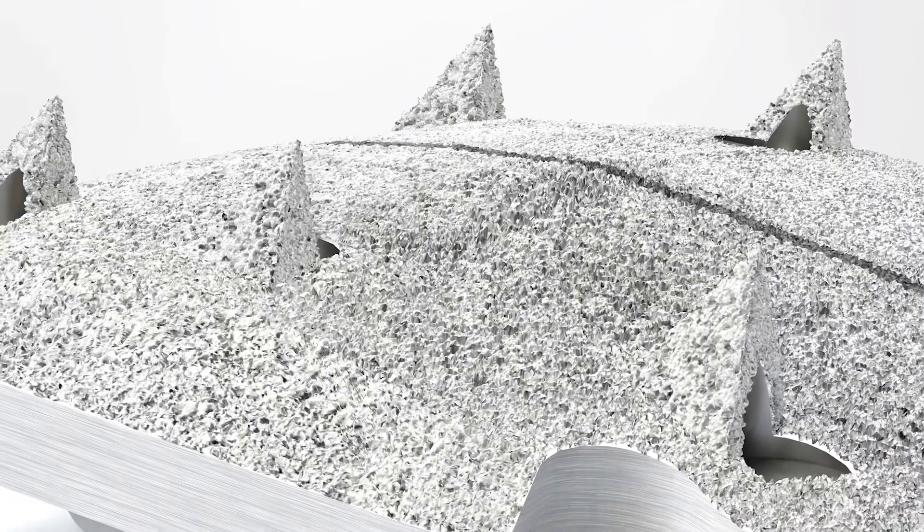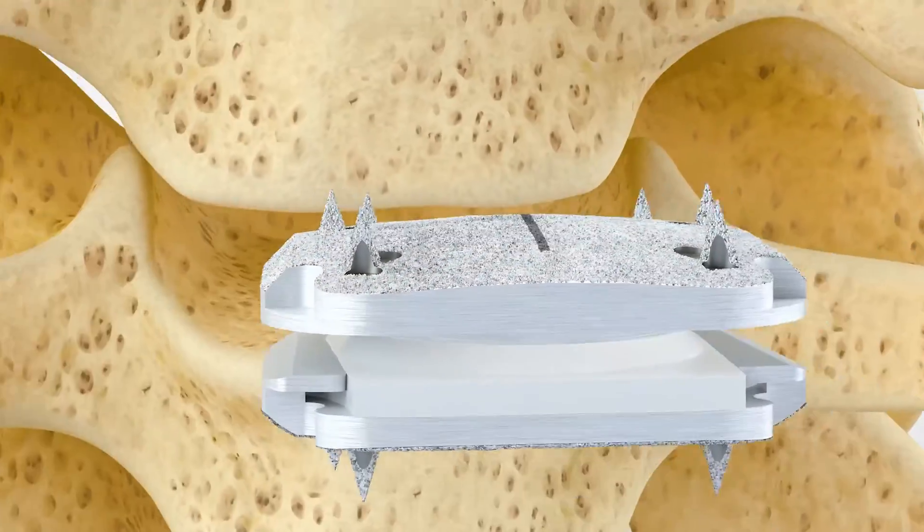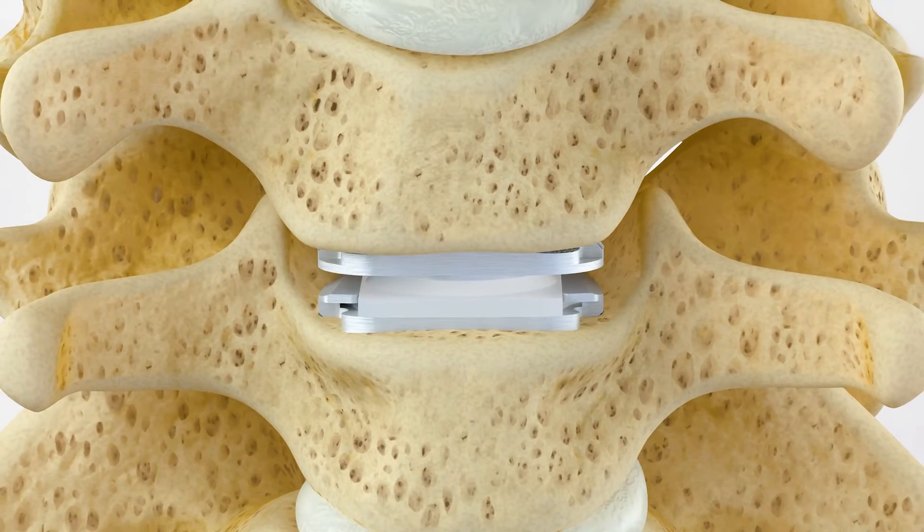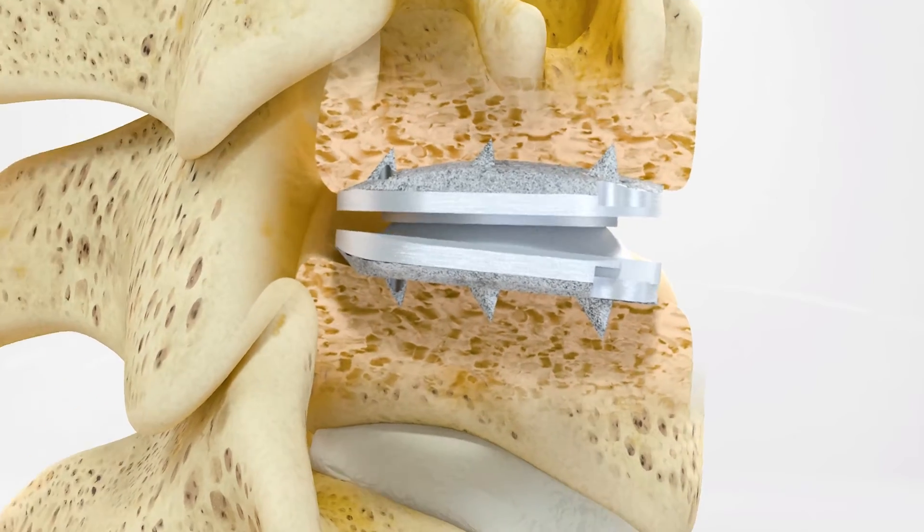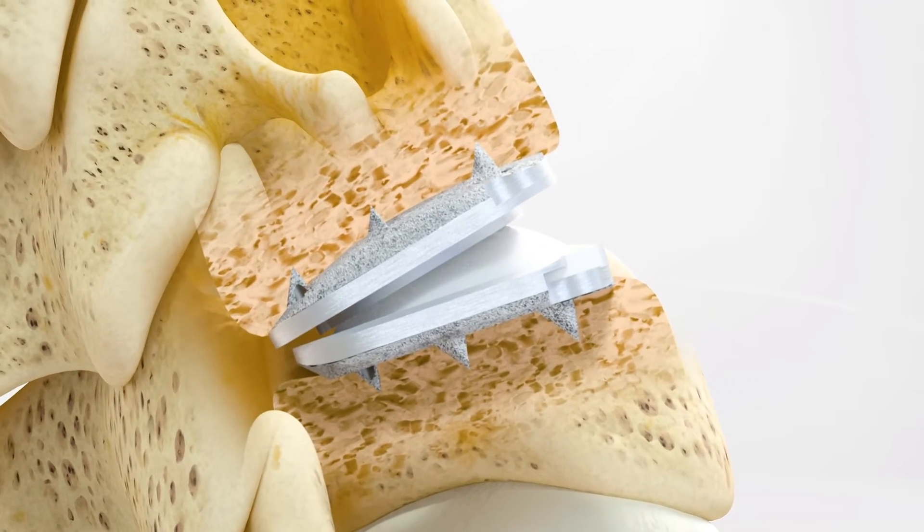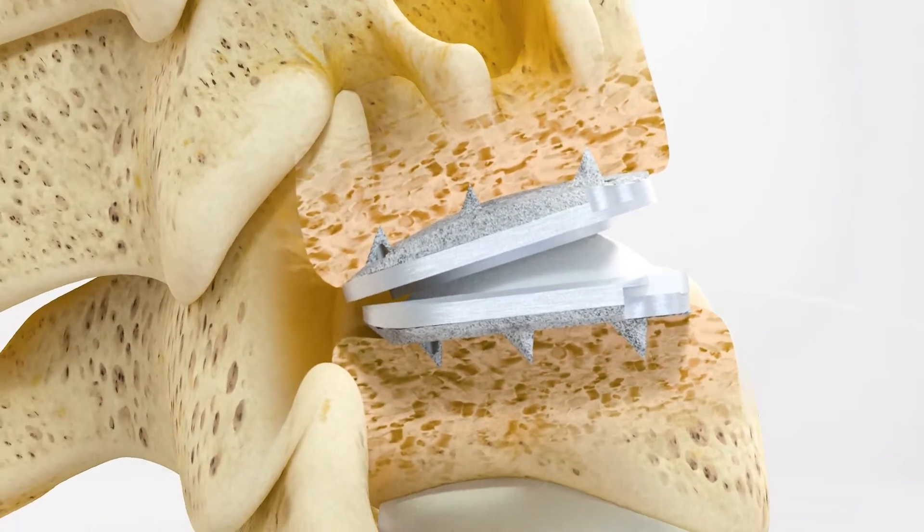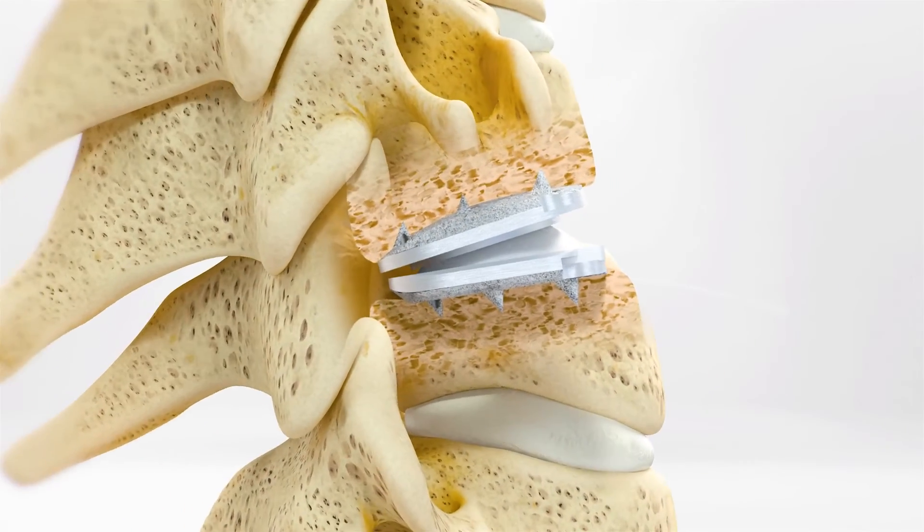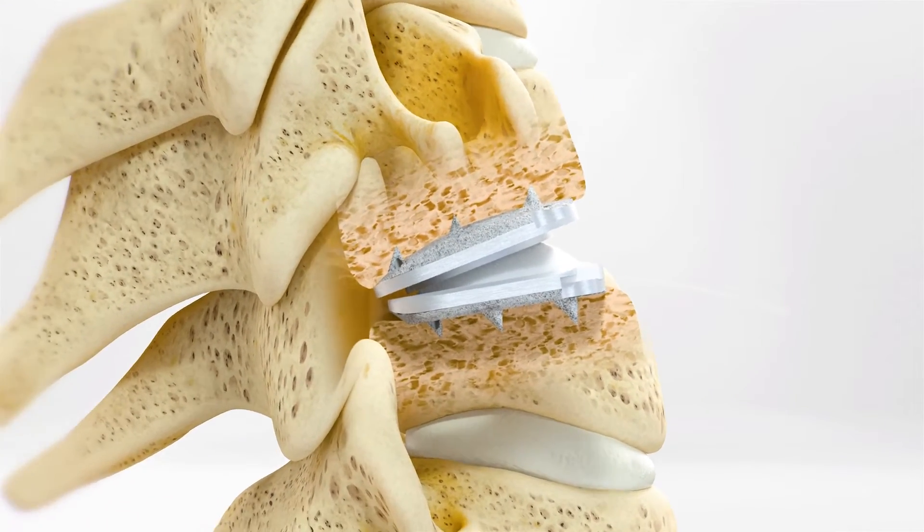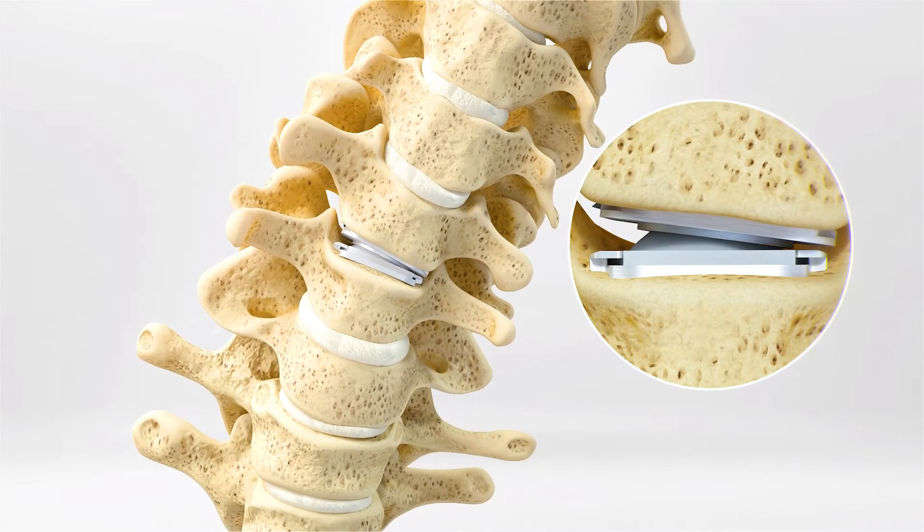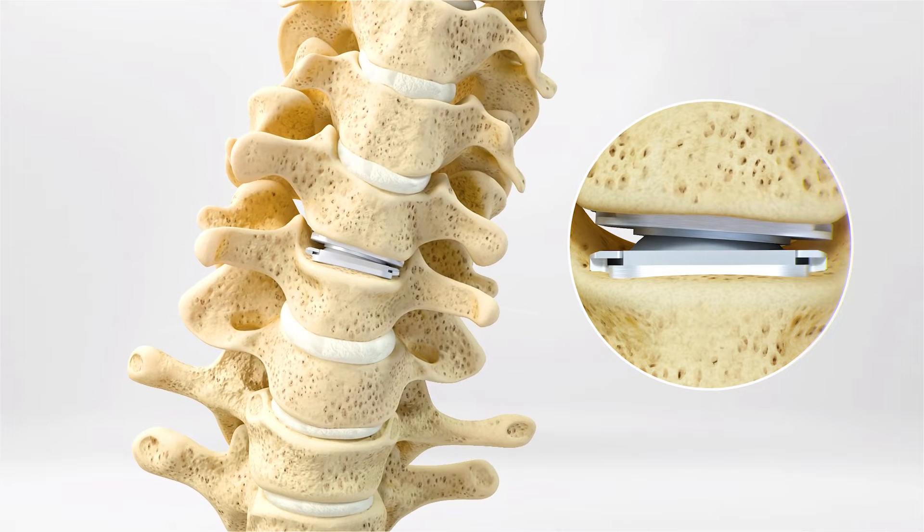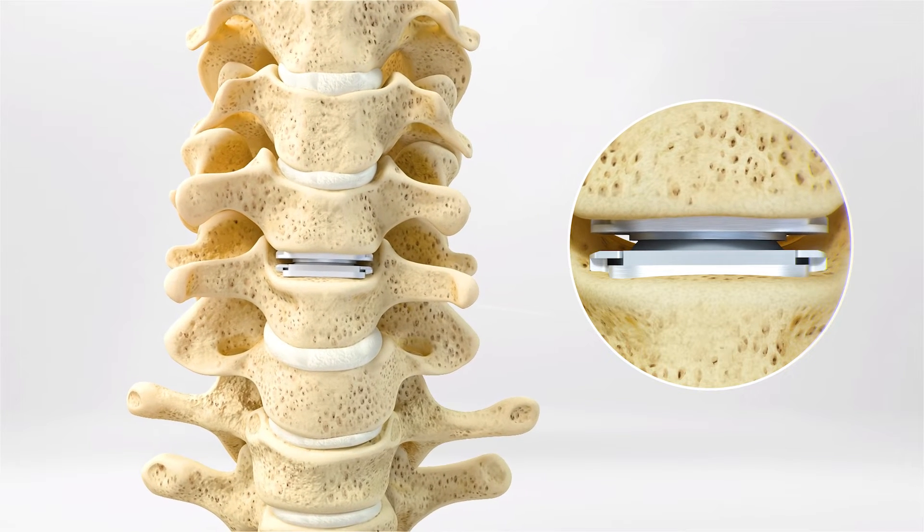The ProDisc C Vivo implant is secured to the vertebral bodies above and below the disc space and held in place with a convex superior end plate and six spikes on the superior and inferior end plates. The implant components work together with the surrounding spinal structures to provide stability and function. The ProDisc C Vivo is a zero-profile implant that does not contact soft tissue structures after it is implanted.